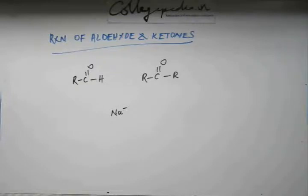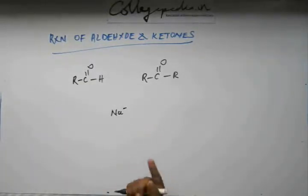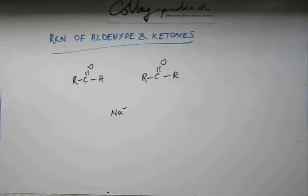If there is an electron giver, if someone is electron rich, that will give the electron. Now, aldehyde and ketone have to accept the electron. Acceptance of electron will be fast if the deficiency of electron is high, so the rate of reaction will be fast. You have to look at which has greater deficiency of electron.